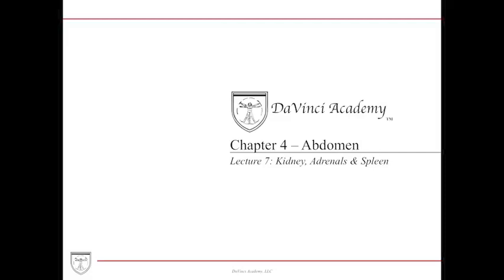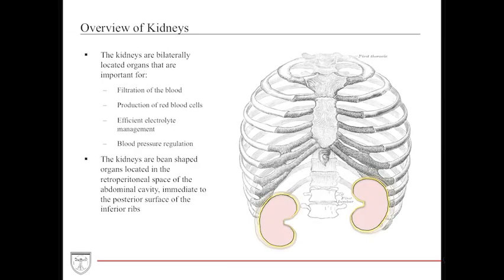Welcome to Da Vinci Academy's chapter 4 section of the abdomen, lecture 7 on the kidney, adrenal glands, and spleen. The first organ we're going to discuss are the kidneys.